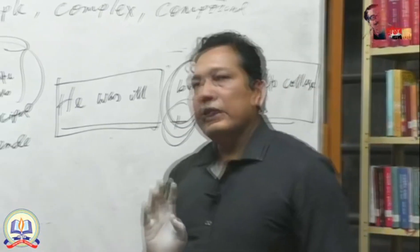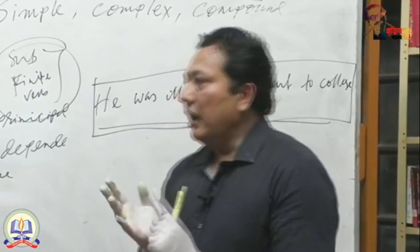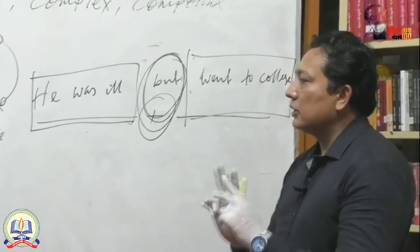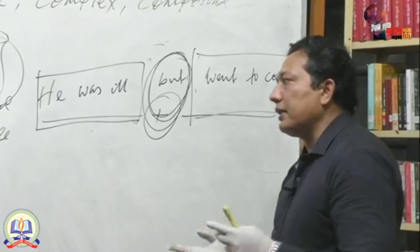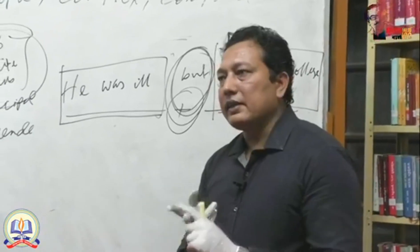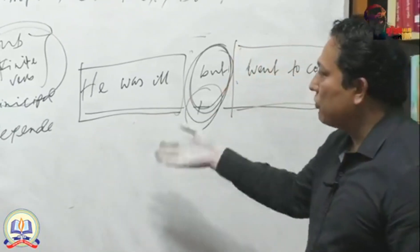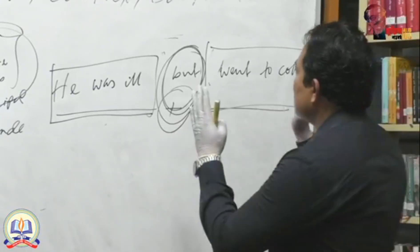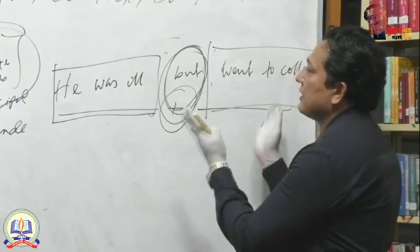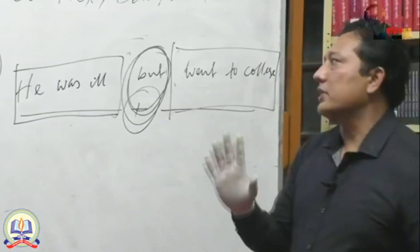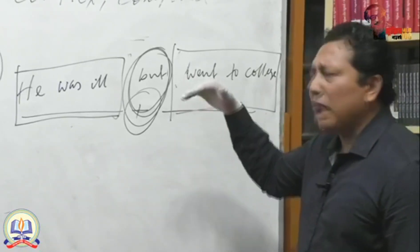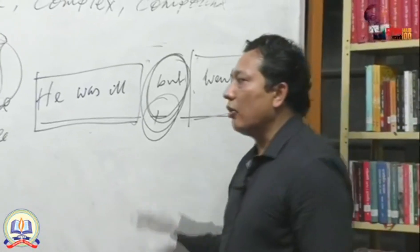To summarize: in a simple sentence, you write down a single subject and a single finite verb. In a complex sentence, you make two parts — one part is dependent on another, giving you a main clause and a subordinate clause. For a compound sentence, you create two clauses that are both independent, added with a coordinating conjunction. These are the primary conceptions about making simple, complex, and compound sentences.